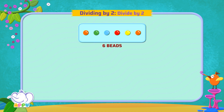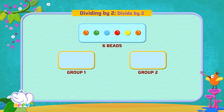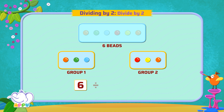Let's divide six beads in two groups. So how many beads are there in each group? When we group six beads in two groups, we get three beads in each group. So we write six divided by two equals three beads in each group.